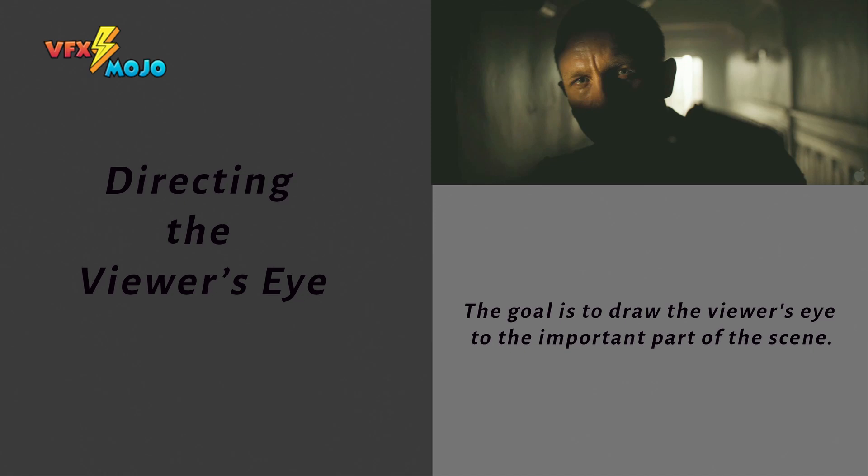Besides aiding the mood of a scene, lighting can help focus the image. The visual goal is to direct the viewer's eye using light — making things read and producing interesting images. Lighting can also aid with arranging objects in space, giving them depth, and should help draw the viewer's eyes to the important parts of a scene.